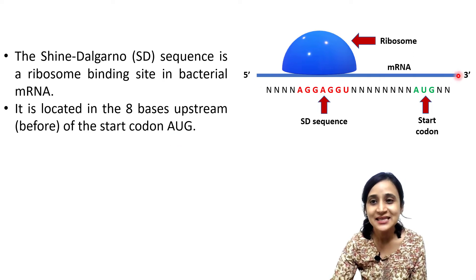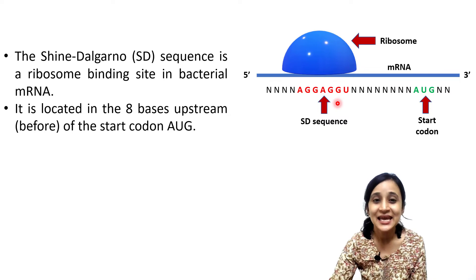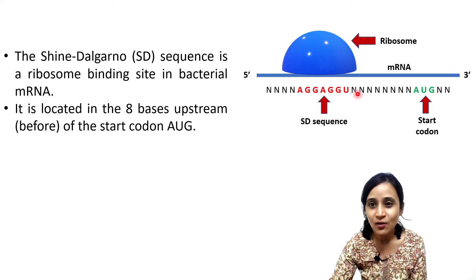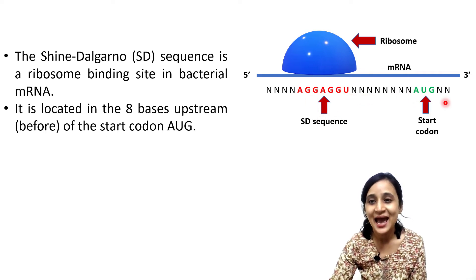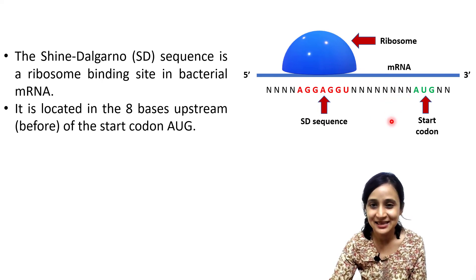Here you can see the mRNA with the start codon AUG, and the SD sequence is present eight bases upstream of AUG. The eight bases are positions one, two, three, four, five, six, seven, eight — so there are eight nucleotides in between the SD sequence and the start codon, and these eight nucleotides could be anything.